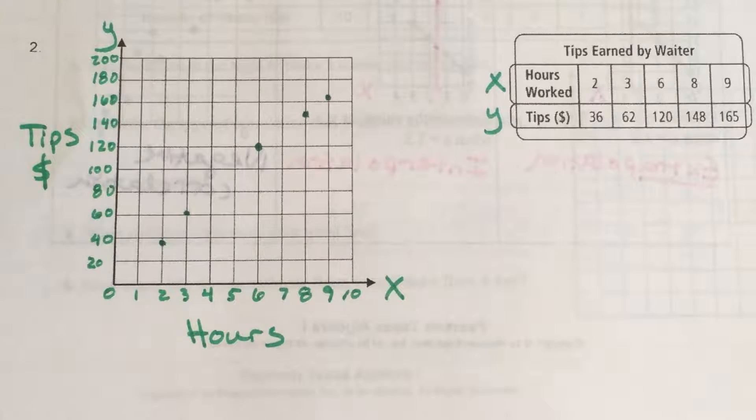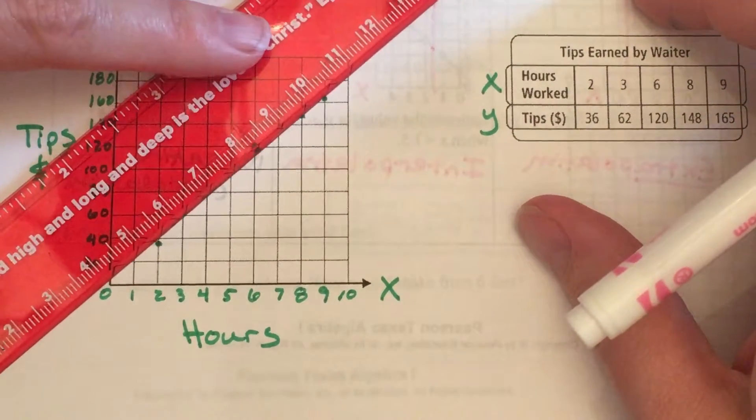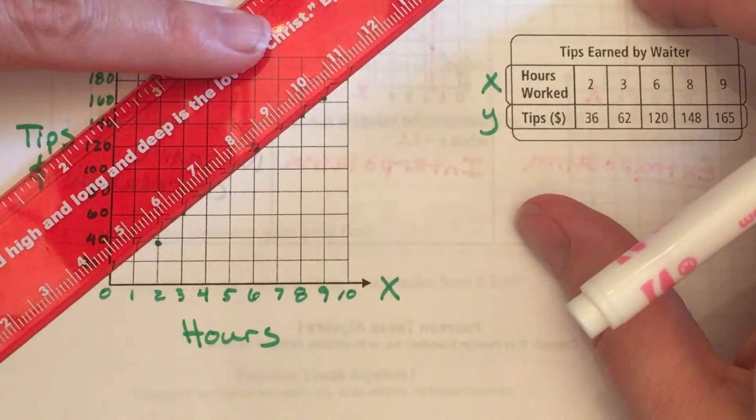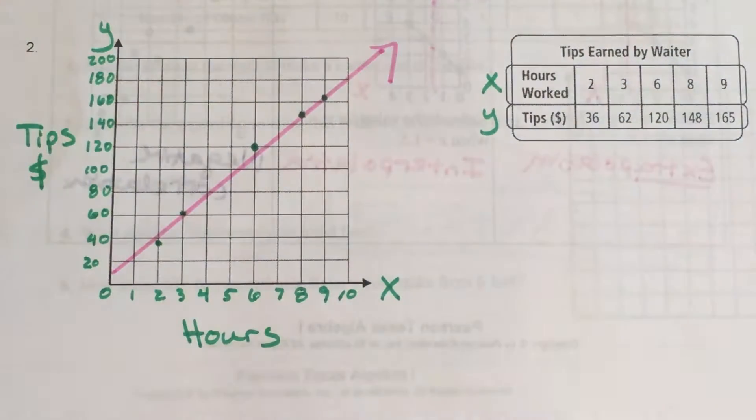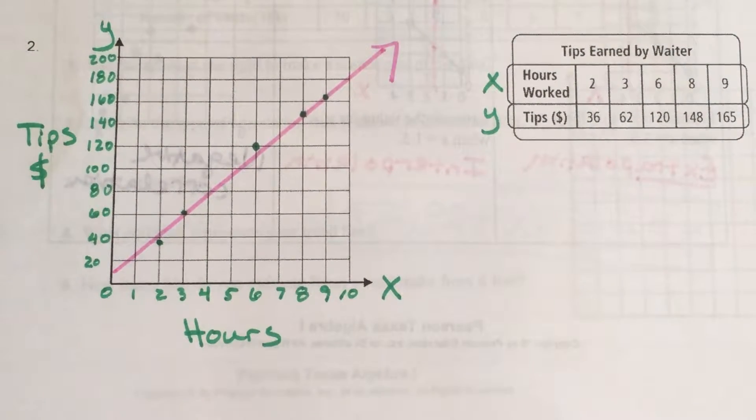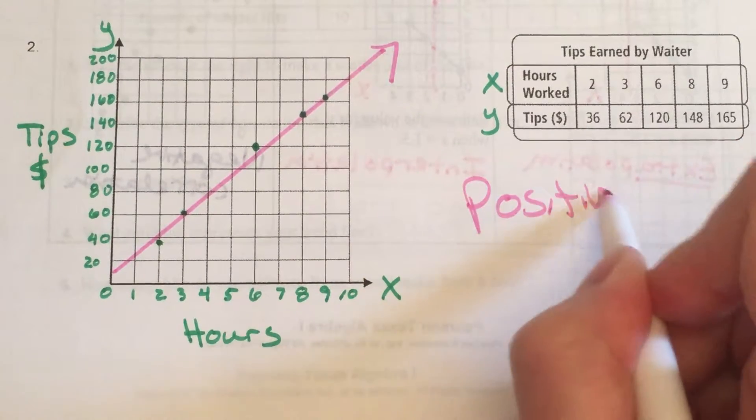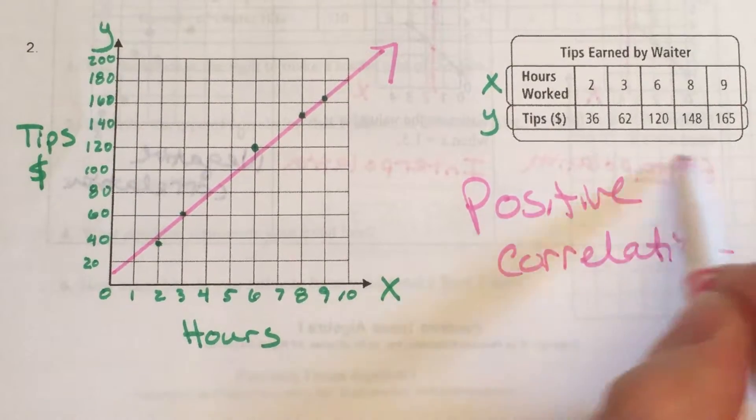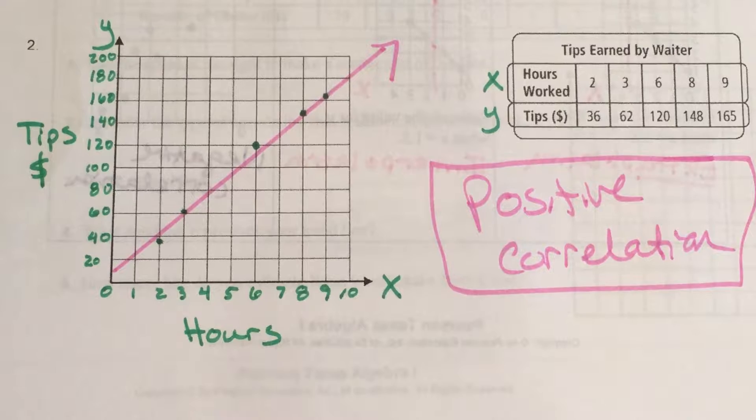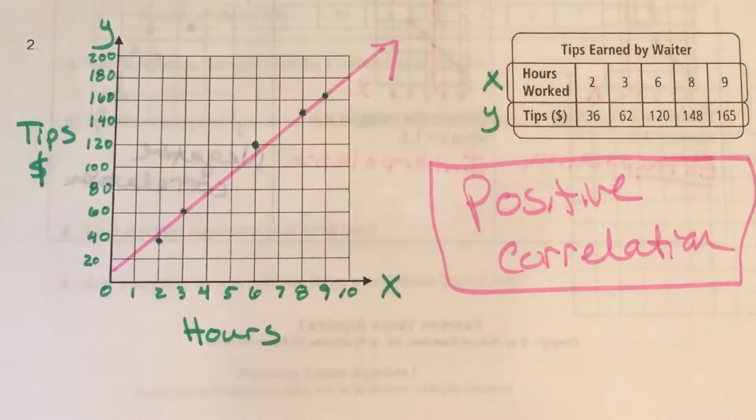All right. So let's see. We've plotted our points. We've carefully practiced that. Let's use our straight edge to give us an idea of where this is going. What type of correlation do you have? Positive, negative, or no correlation? Excellent. Yes. I really hope the more you work, the more tips you're going to get. Because otherwise you don't need to work there. Let's turn the page.